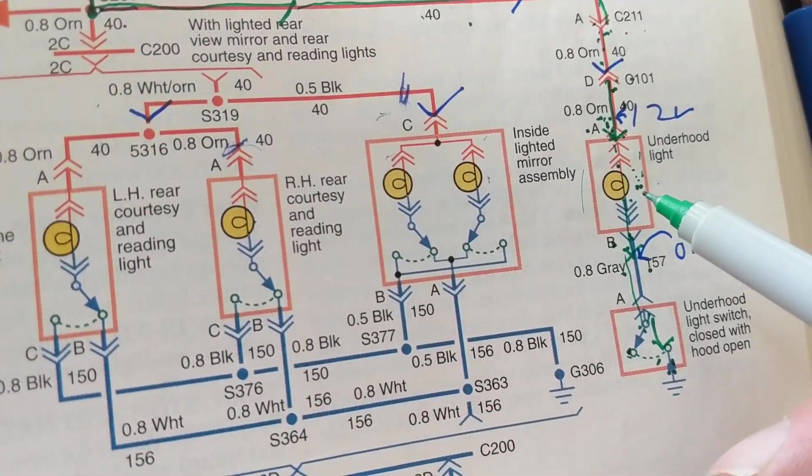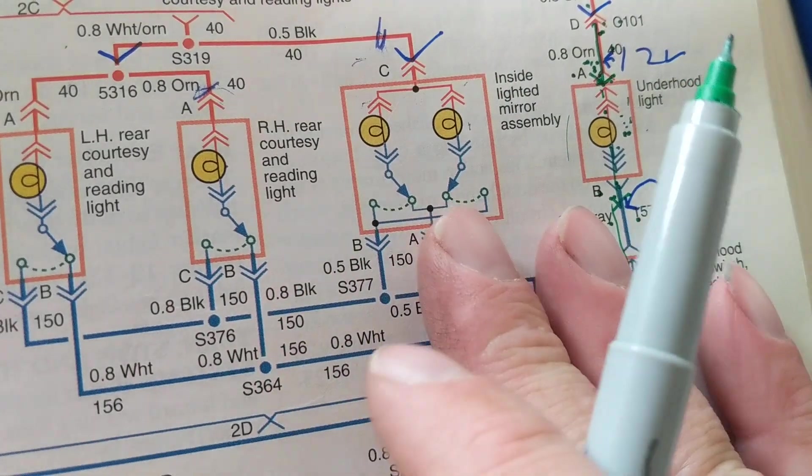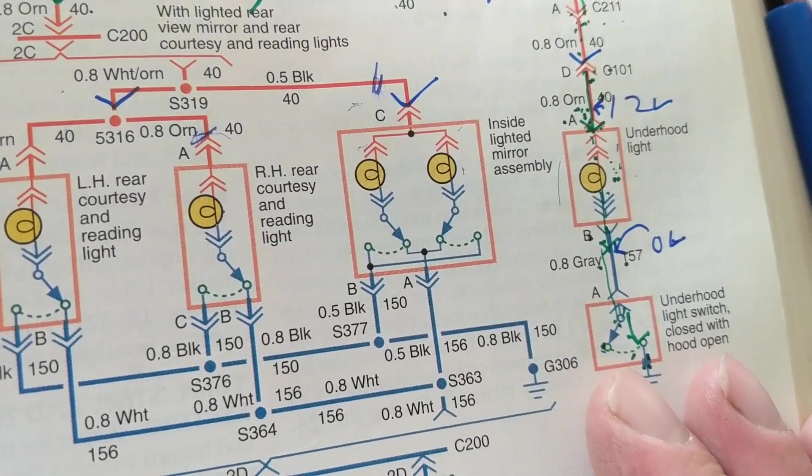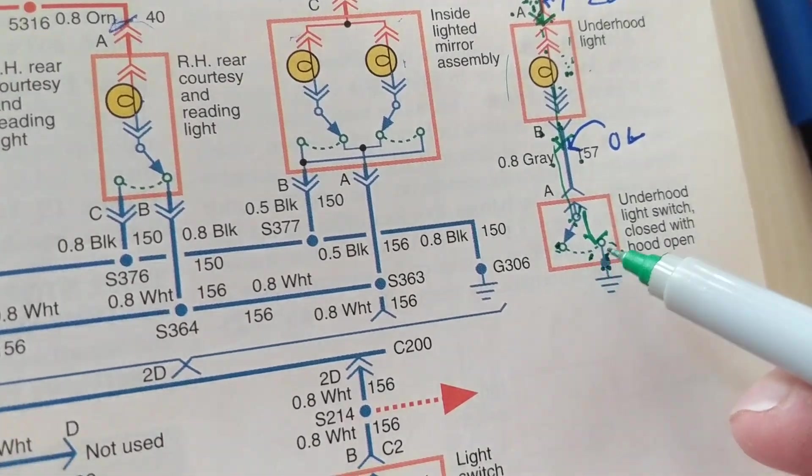So current is flowing here. Comes into the bulb. Goes out the other way. Terminal B comes out. Comes in terminal A. Goes out terminal B. We went from an orange wire to a gray wire. So if you go to the connector that's connected to the bulb, you're going to have two wires. One is going to be orange and one is going to be gray. The gray is going to go to ground. Now here's the whole thesis of this.